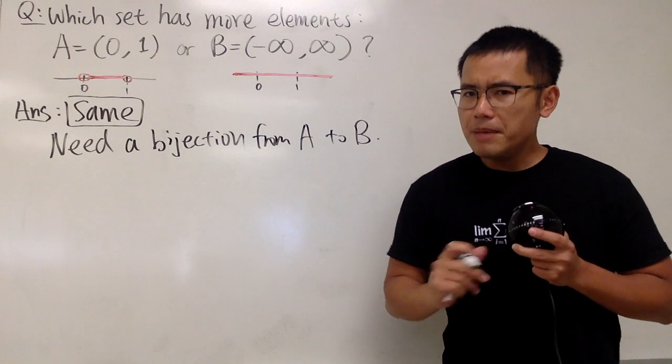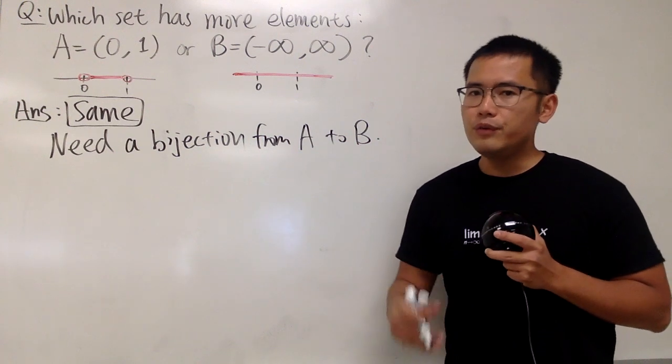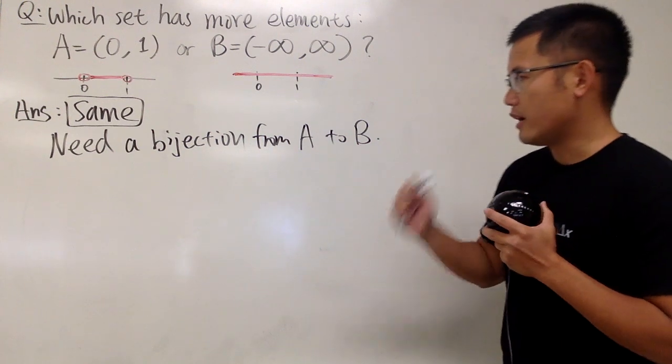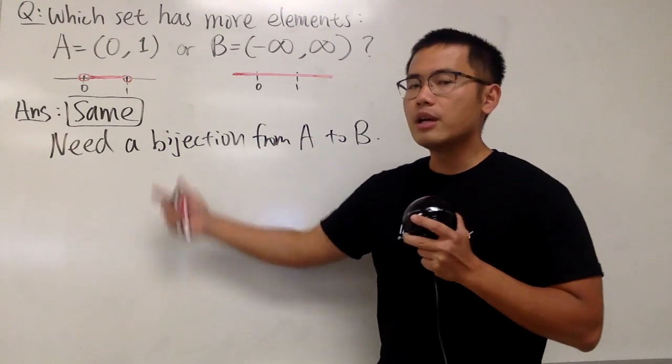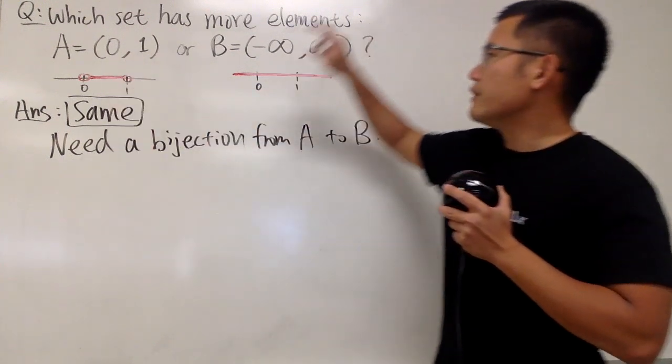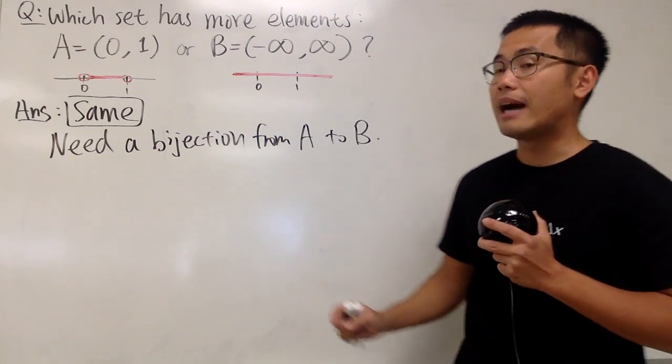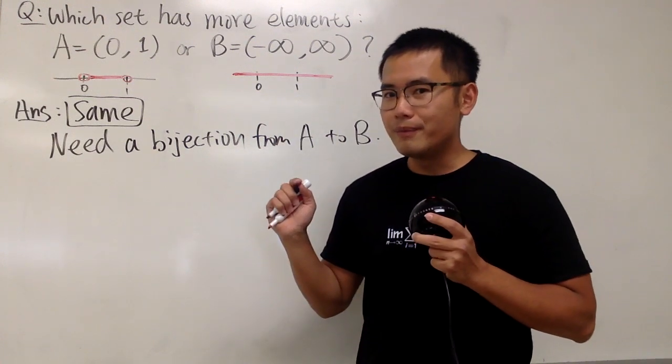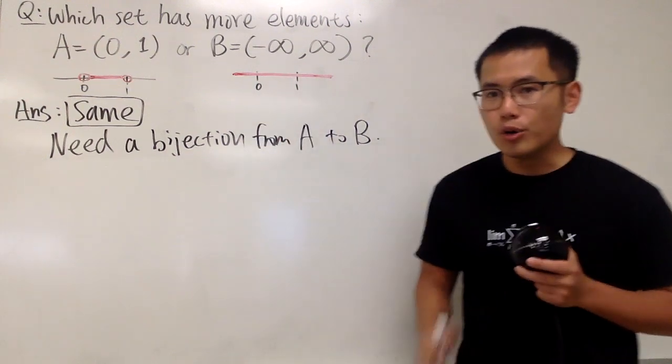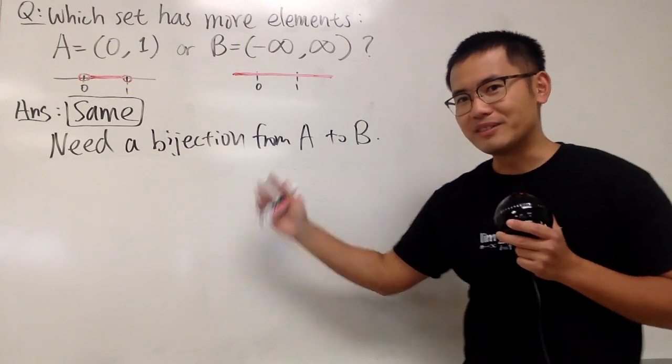So now, maybe you want to pause the video and think about if you can come up with a 1 to 1 and onto function, namely a bijection going from this interval to that interval. If you can do so, then that means that we do have the same number of real numbers in this set and also that set. So please pause the video and think about this first.